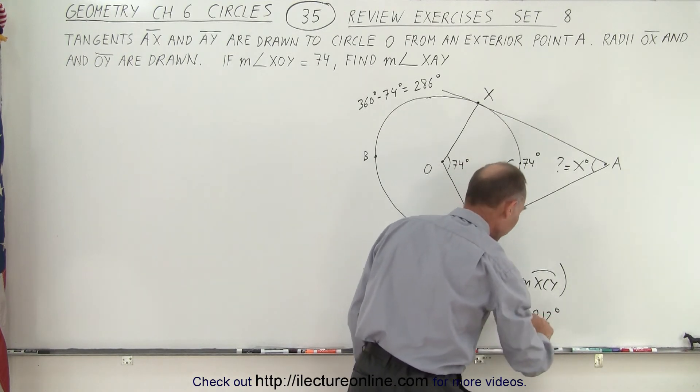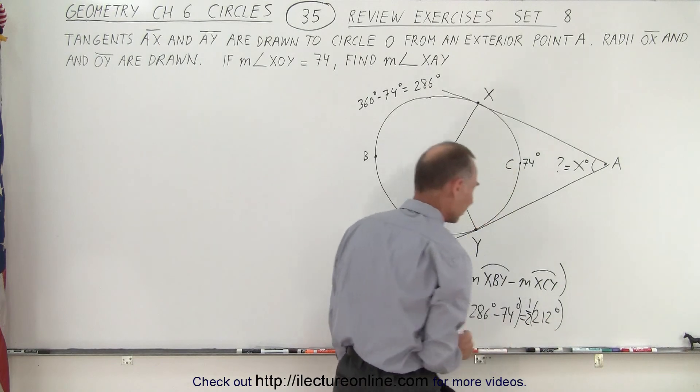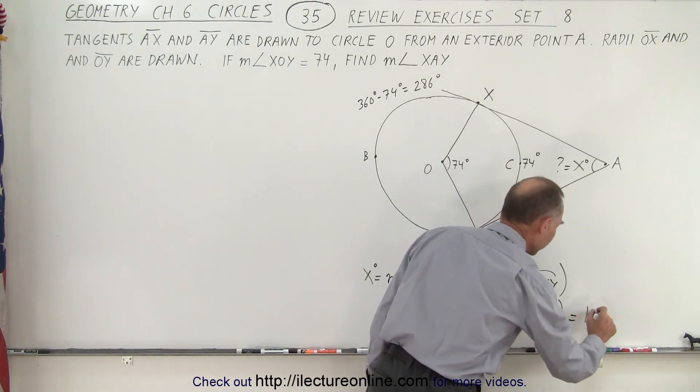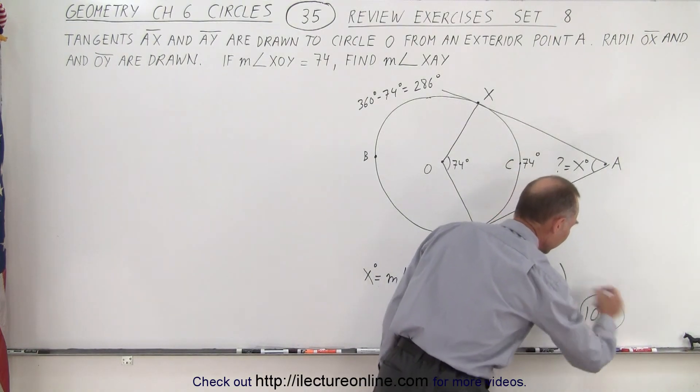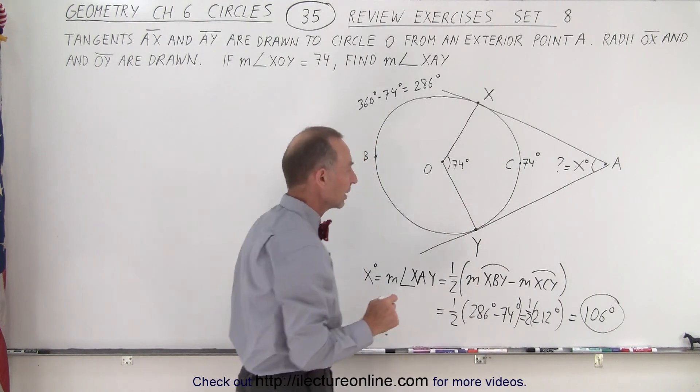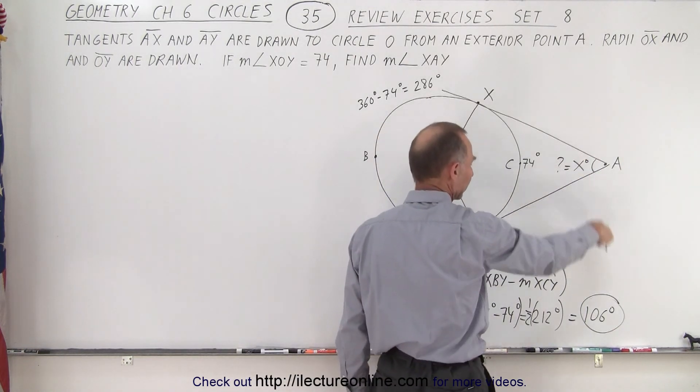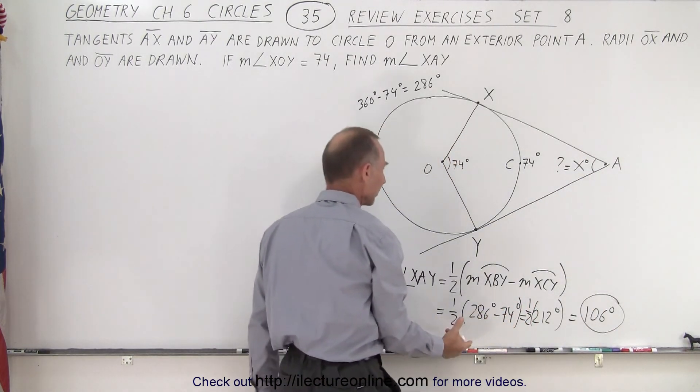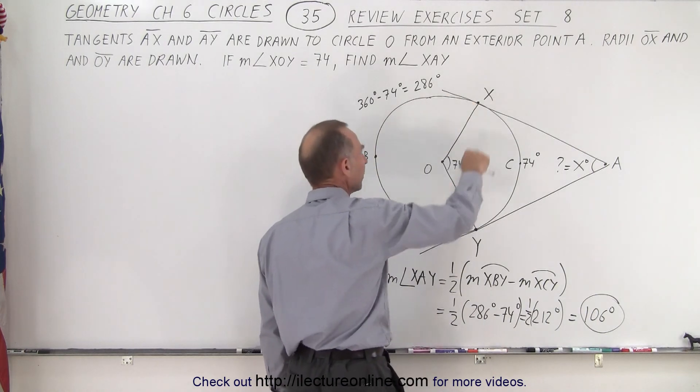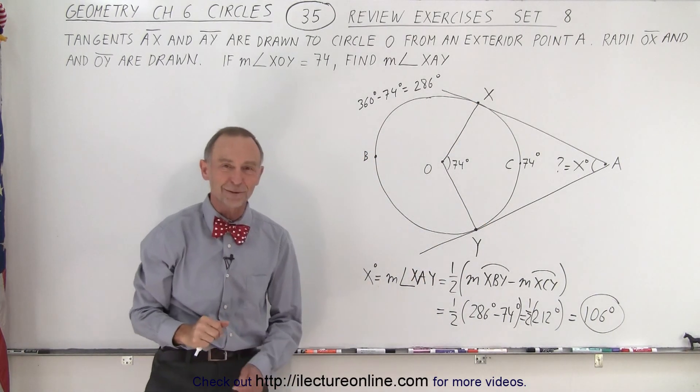And of course, that would be half of that, half of 212 degrees, and that would be 106 degrees. So that's the answer we're looking for. The angle, the measure of this angle is 106 degrees, which can be found by taking half of this measure minus half of this measure, and that is how it's done.